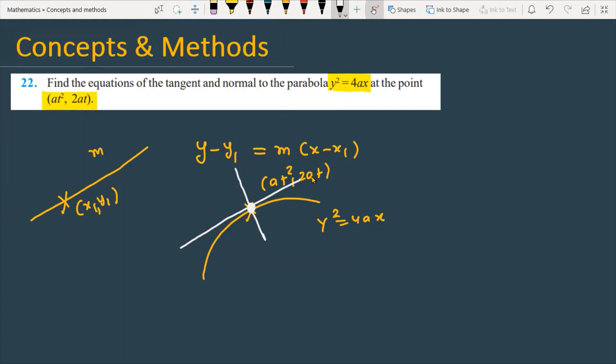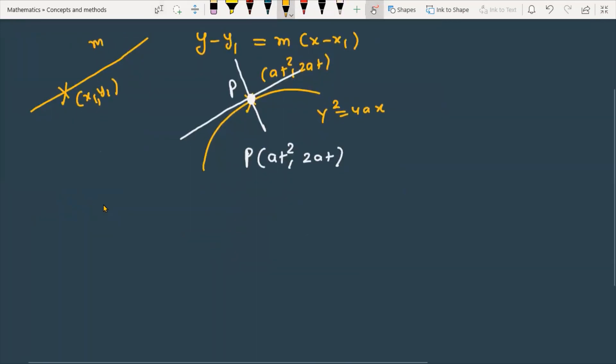You can see the information given is the point of contact P representing (at², 2at). The unknown data is the slope for both the tangent and normal. My target is to find the equations of the tangent and normal at this point.